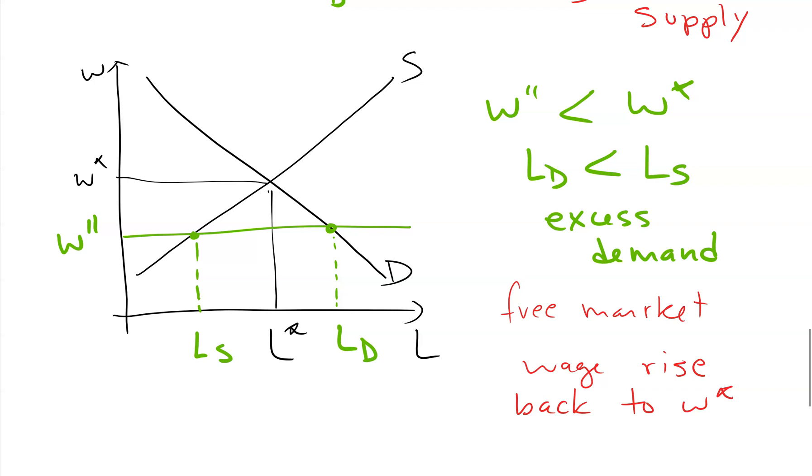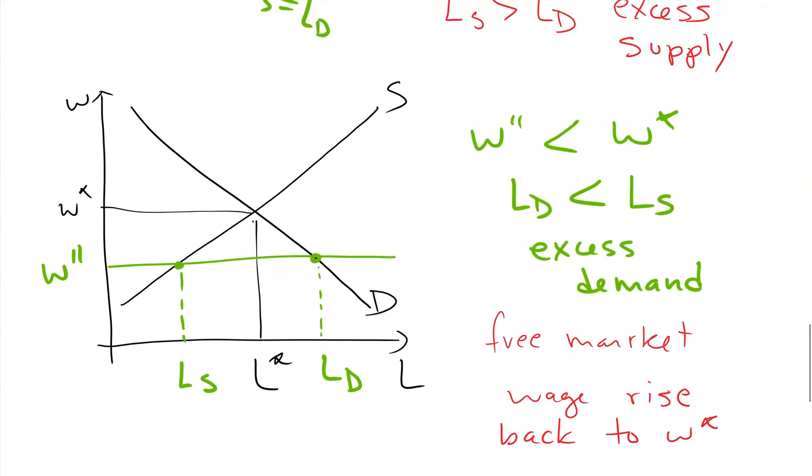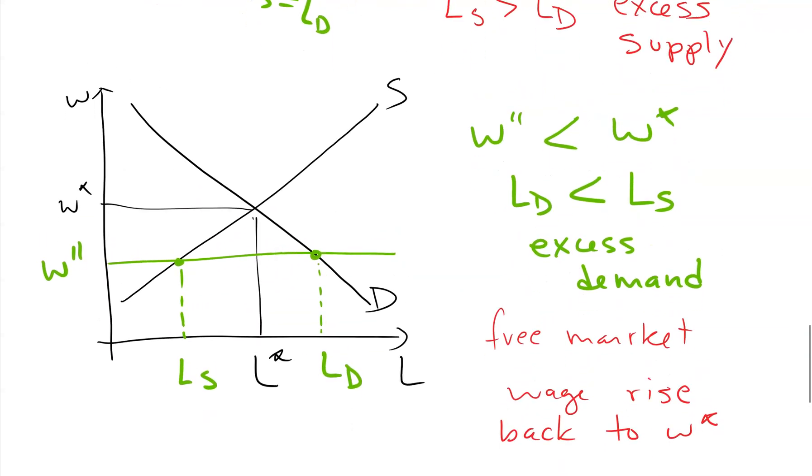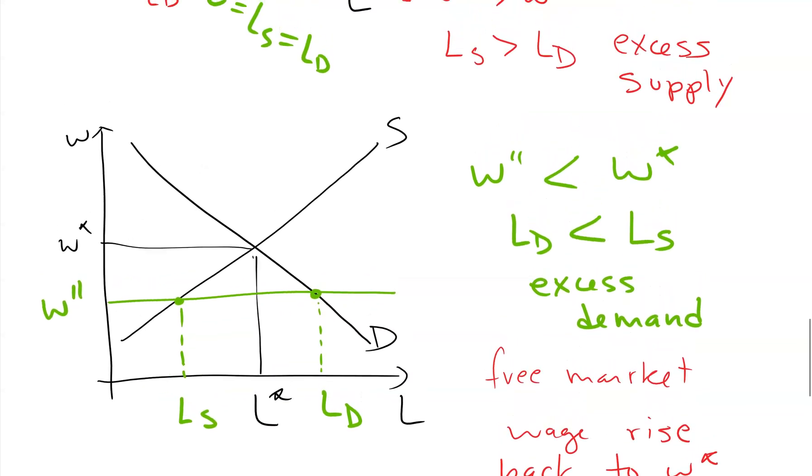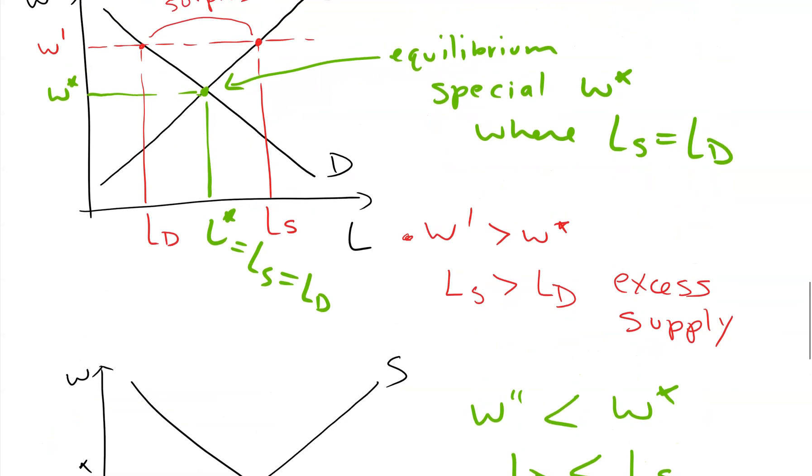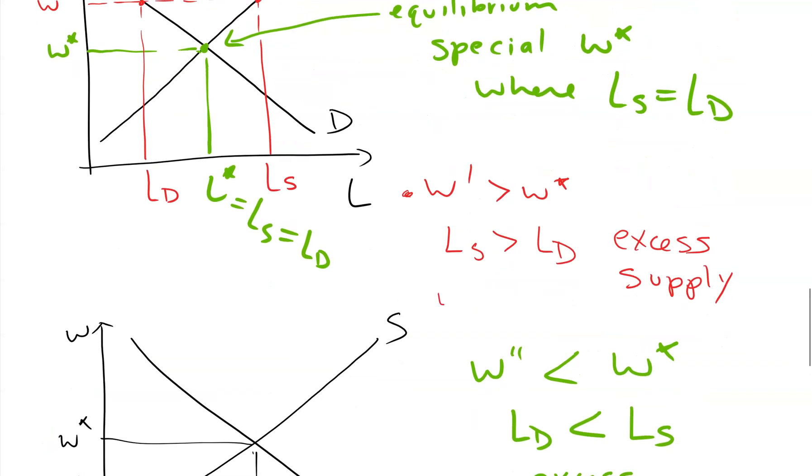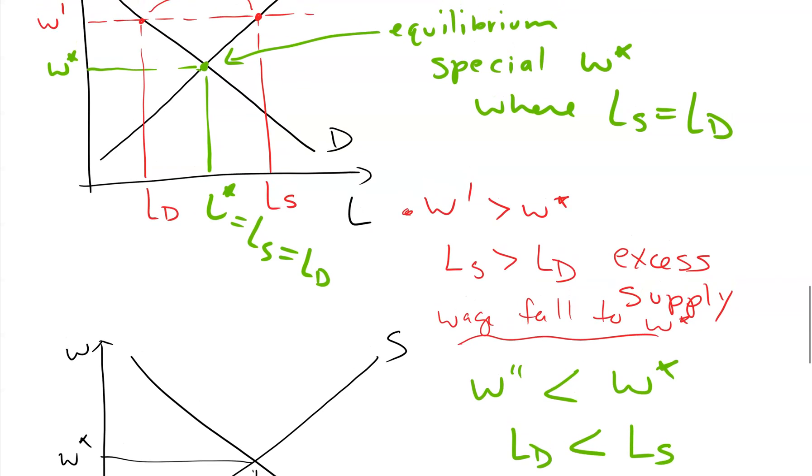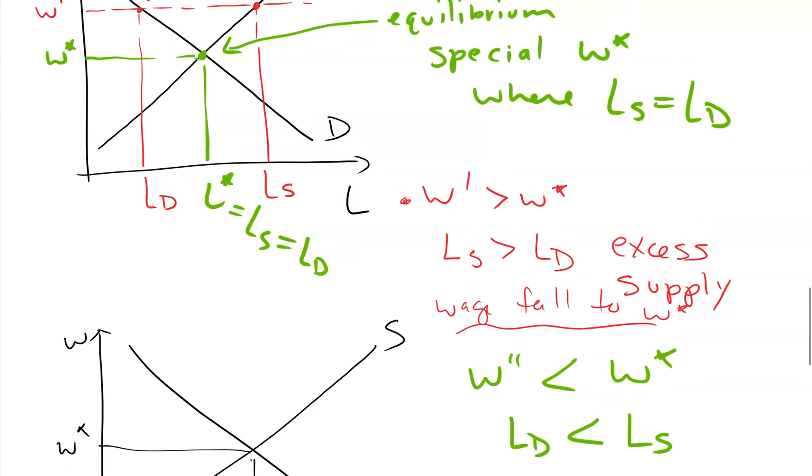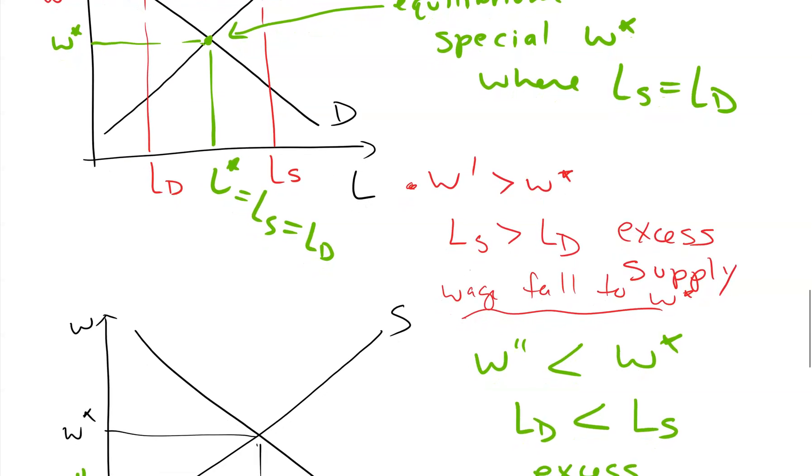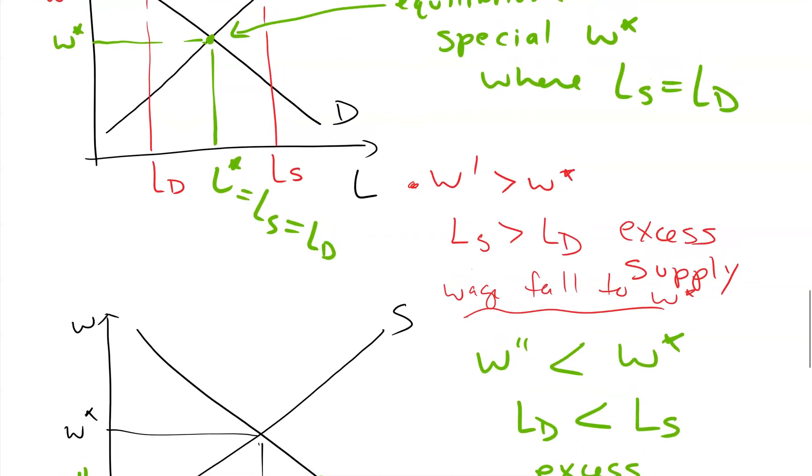There might be some processes that make this a little bit slow, but eventually we would start heading towards W star. When we have the situation where people just can't find the workers they need at the current wage, going back to the one above, we would also expect the wage will fall to W star. People who want jobs and can't find them will start to take lower wages if possible. That's why W star is the stable point - in both cases of excess supply and excess demand, the market forces will tend to push us back towards this point.